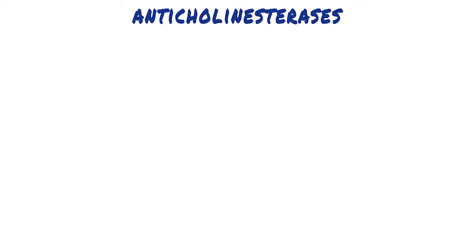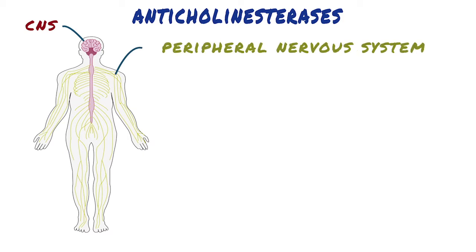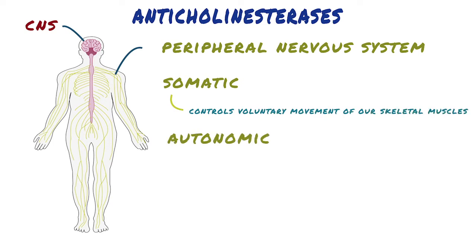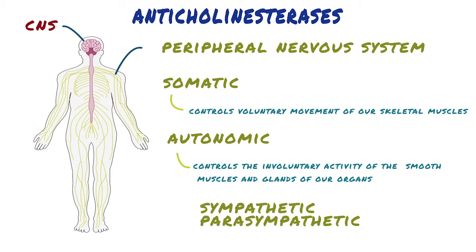Anticholinesterases. The nervous system is composed of two divisions: the central nervous system, which includes the brain and the spinal cord, and the peripheral nervous system, which includes all the nerves that connect the central nervous system to the muscles and organs. The peripheral nervous system is divided into the somatic nervous system, which controls voluntary movement of our skeletal muscles, and the autonomic nervous system, which controls the involuntary activity of the smooth muscles and glands of our organs, and is further divided into the sympathetic and parasympathetic nervous systems.